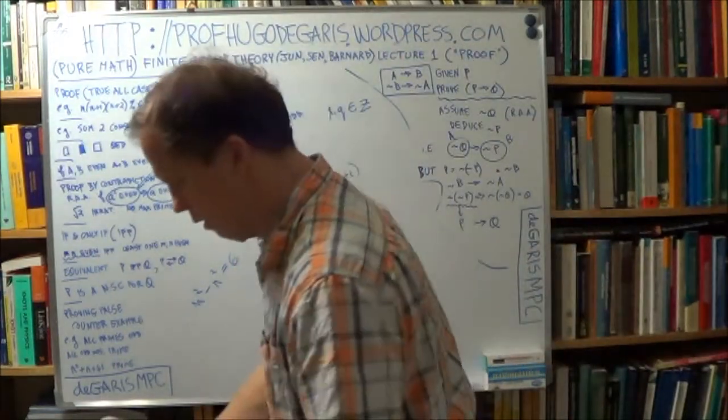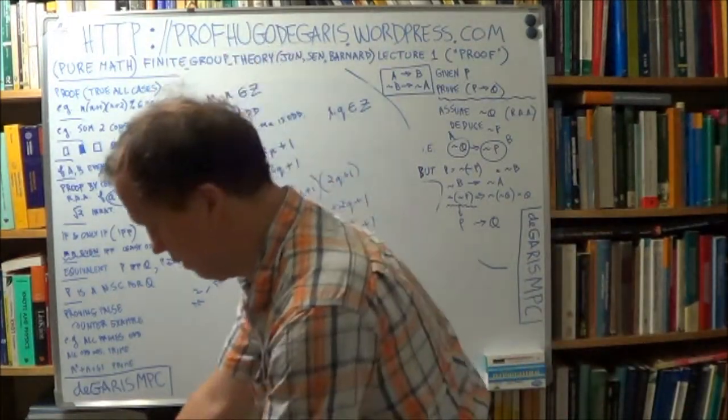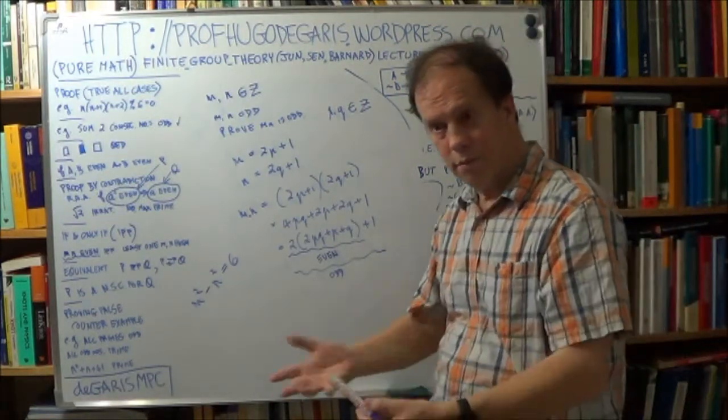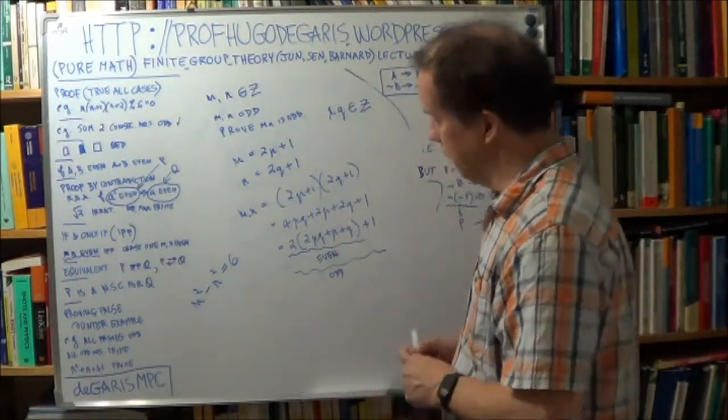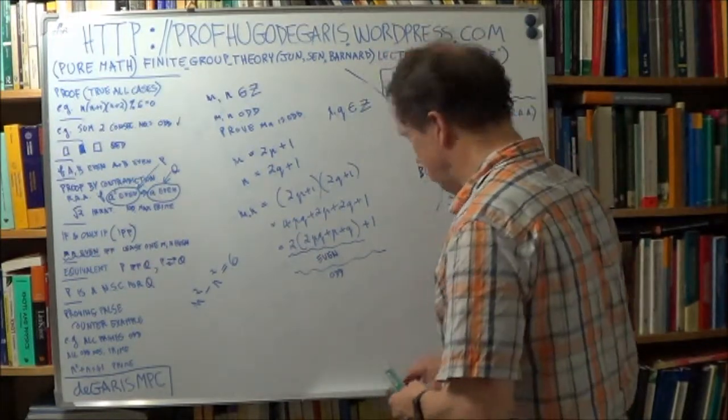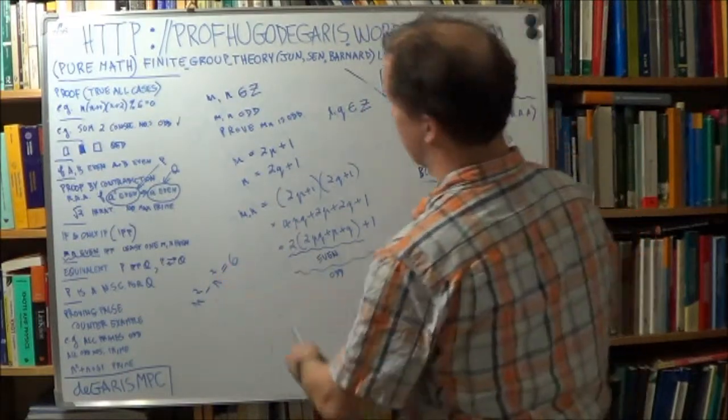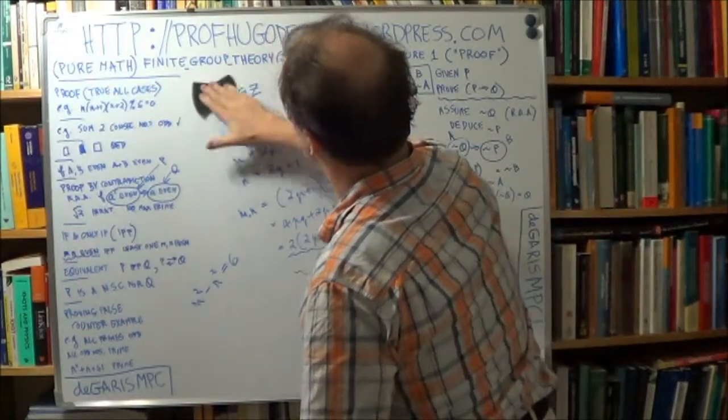Now you've got to use proof by contradiction, so that means you will assume the opposite, right? That means that you assume that there are m and n that this is true, and then get a contradiction.